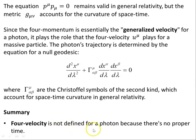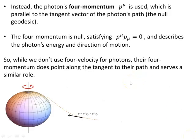So in summary, four velocity is not well defined for a photon because there's no proper time, but we can get around it by using the four momentum to take its place. Instead, the photon's four momentum P mu is used, which is parallel to the tangent vector of the photon's path, the null geodesic, just as the four velocity is. The four momentum is null satisfying this condition, and describes the photon's energy and direction of motion. So while we don't use four velocity for photons, their four momentum does point along the tangent to their path and serves a similar role.